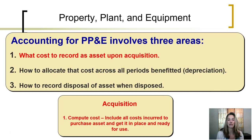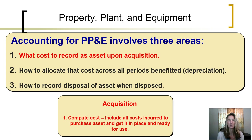The accounting for property, plant, and equipment involves three areas. The first is what the cost needs to be recorded as an asset upon acquisition. The second is how to allocate that cost across all periods benefited, which is the depreciation, and how to record the disposal of an asset upon end of use when it is disposed. Today, in this episode, we are going to discuss the acquisition.